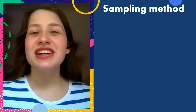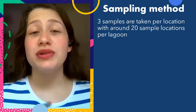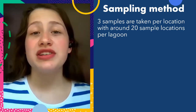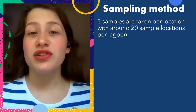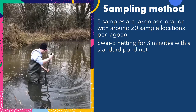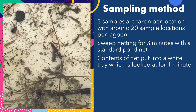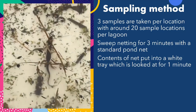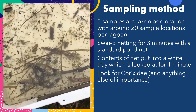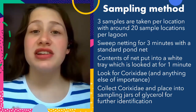The method to collect Corixidae is as follows. Three sets of samples are taken per location, at around 20 sample locations per lagoon or reservoir, making sure to include all the major habitat types such as reed bed, emergent vegetation, or open water. You also have to remember to clean equipment between each reservoir or lagoon to prevent the spread of disease or invasive non-native species. Each sample is taken using a standard pond net and sweeping for three minutes within the water. The contents are then placed into a white tray with some of the lagoon or reservoir water so you can see everything. Corixidae are then picked out within one minute and placed into a sample jar of glycerol to preserve them for further identification in the lab.